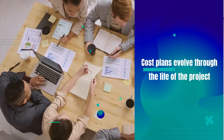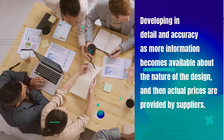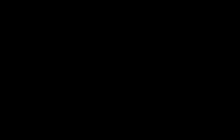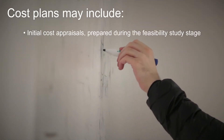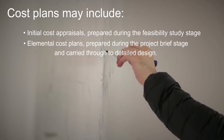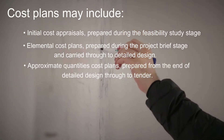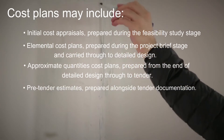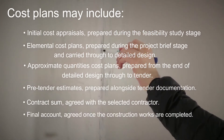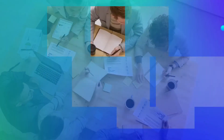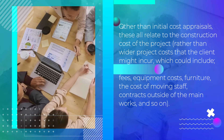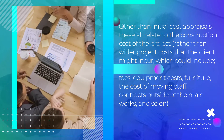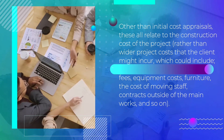Cost plans evolve through the life of the project, developing in detail and accuracy as more information becomes available about the nature of the design, and then actual prices are provided by suppliers. Cost plans may include: initial cost appraisals prepared during the feasibility study stage; elemental cost plans prepared during the project brief stage and carried through to detailed design; approximate quantities cost plans prepared from the end of detailed design through to tender; pre-tender estimates prepared alongside tender documentation; the contract sum agreed with the selected contractor; and the final account agreed once construction works are completed. Other than initial cost appraisals, these all relate to the construction costs of the project rather than wider project costs the client might incur, which could include fees, equipment costs, furniture, the cost of moving staff, contracts outside of the main works, and so on.